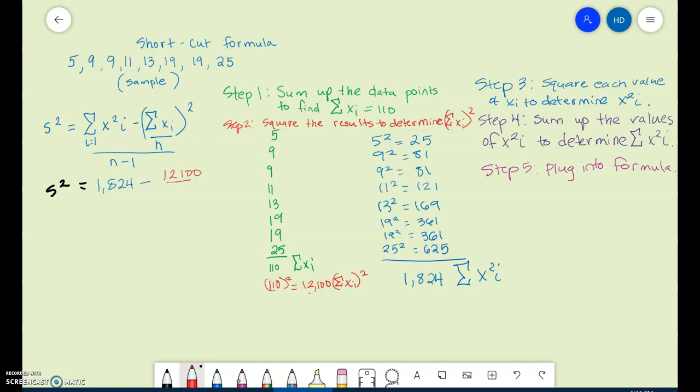And then over n. N is the number of data points that we have, and we have 8 data points. So we're going to divide by 8, and then that's going to be all over n minus 1. So when you do 12,100 divided by 8, you get 1,512.5, and then subtract that and divide by 7. You will get 44.5.